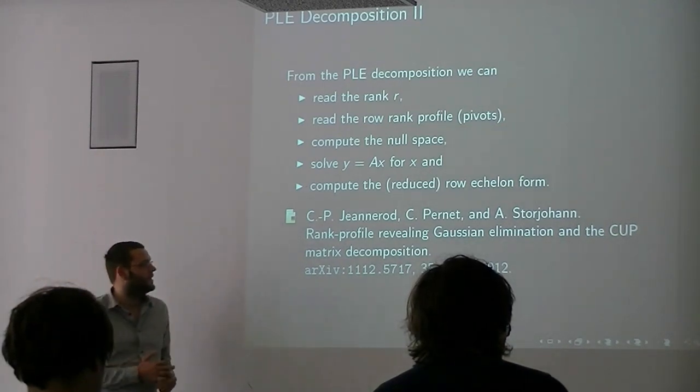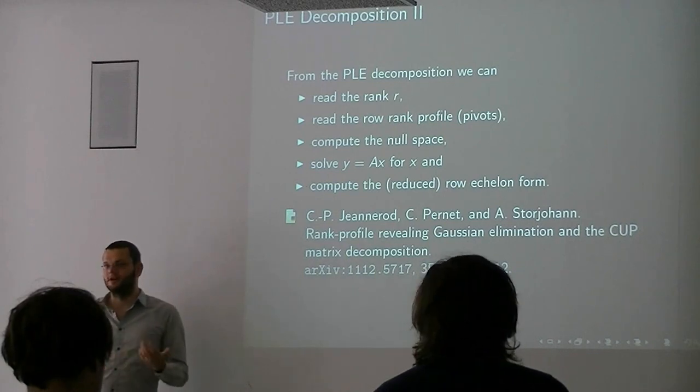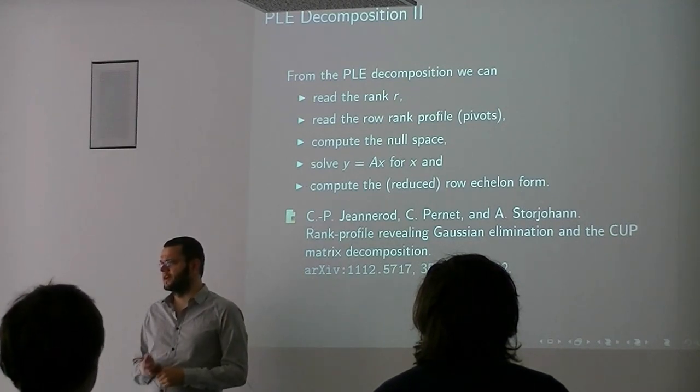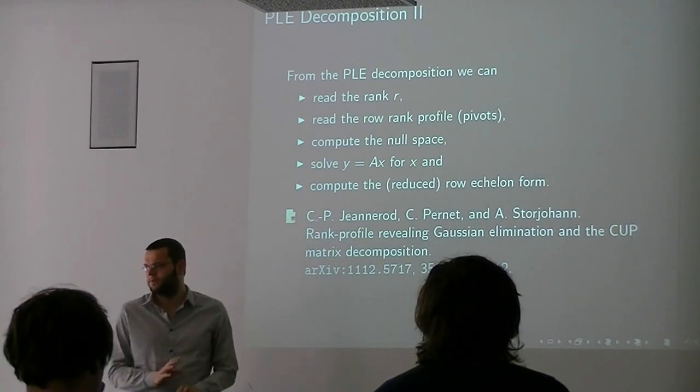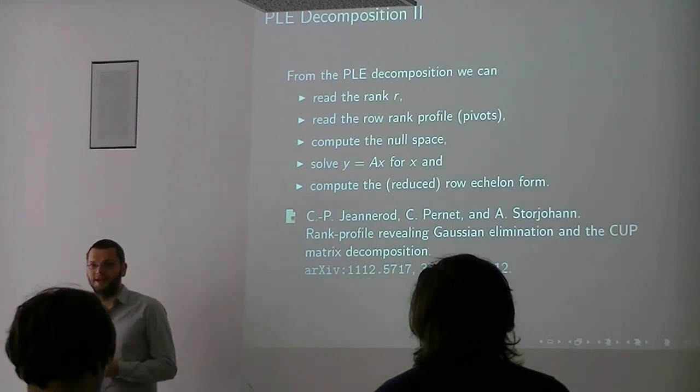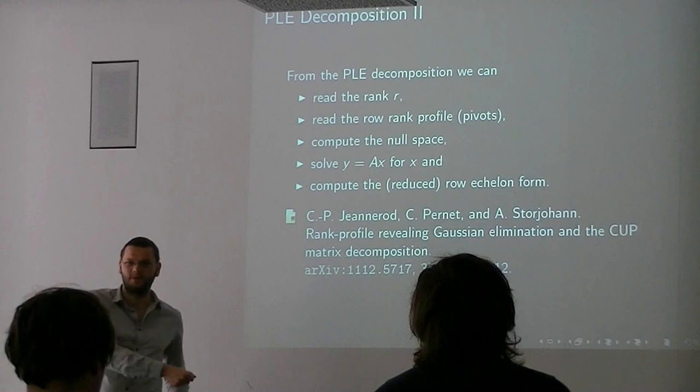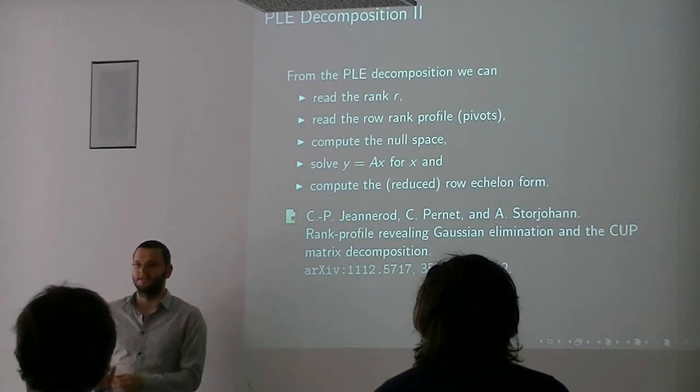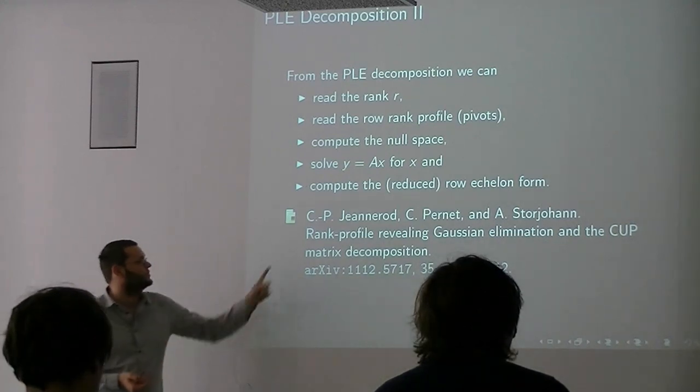If you multiply this up, then you get back your original matrix. That's why we're using this decomposition to compute things. From the PLE you can read ranks and row rank profiles, which is something we care about when we compute. You can compute null space, you can solve, and you can compute the reduced row echelon form efficiently. Actually the PLE, or CUP if you look at everything transposed, like Dumas is doing in this paper - this paper kind of tells you in terms of the leading constants of complexity, PLE or CUP is what you want to do.